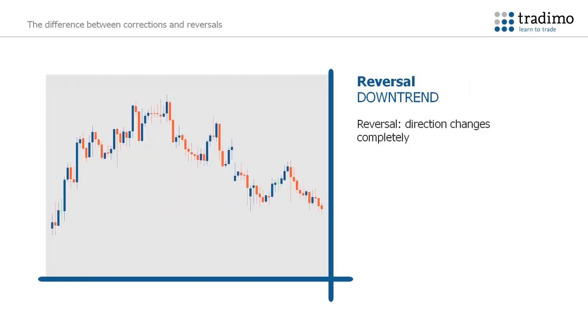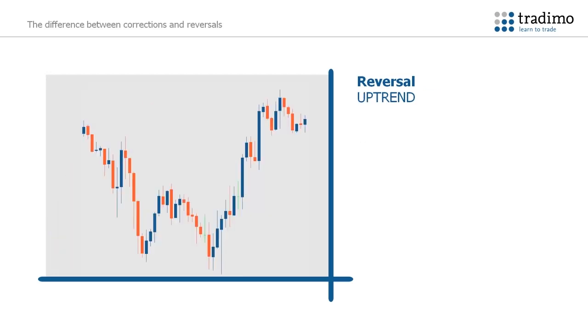A reversal is when the market direction changes completely. Here is an example when a trend reverses to the downside. Here is when a market reverses to the upside.